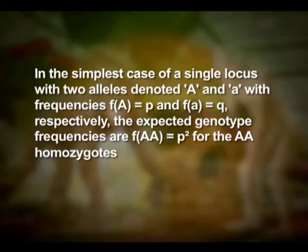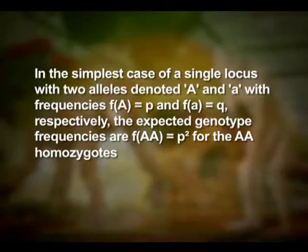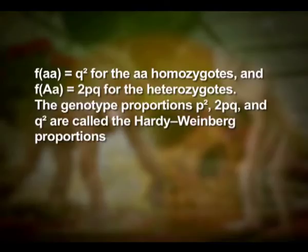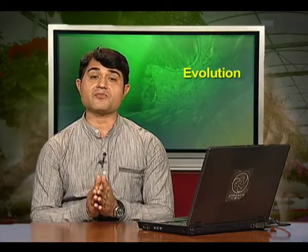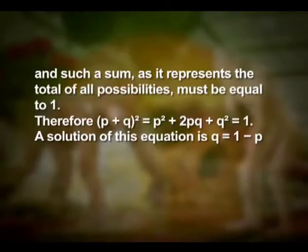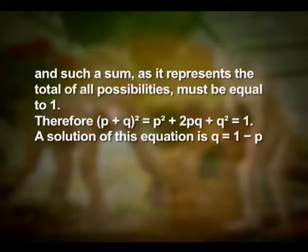In the simplest case of a single locus with two alleles denoted as capital A and small a, with frequencies p and q respectively, the expected genotype frequencies are: for homozygotes of capital A, p squared; for homozygotes of small a, q squared; and for heterozygotes, 2pq. So the genotype proportions p squared, 2pq, and q squared are called Hardy-Weinberg proportions. Note that the sum of all genotype frequencies is the binomial expansion of the square of the sum of p and q, and such a sum must equal 1. Therefore, (p + q)² = p² + 2pq + q² = 1.